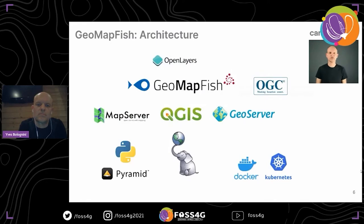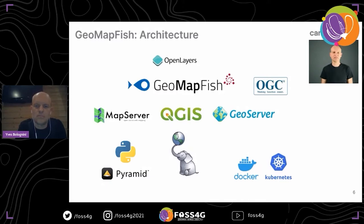About the architecture: GeoMapFish uses OpenLayers on the front-end, OGC sources, and on the back-end it uses mostly Python and Pyramid. As map engines it uses MapServer, QGIS Server, and GeoServer. It is based on Docker and also uses Kubernetes for production. As a database we have mostly PostgreSQL and PostGIS for the GIS part.